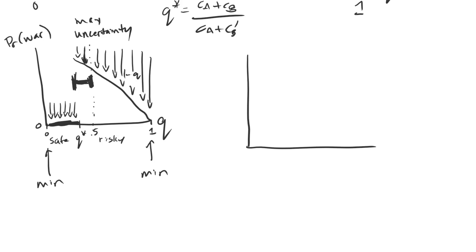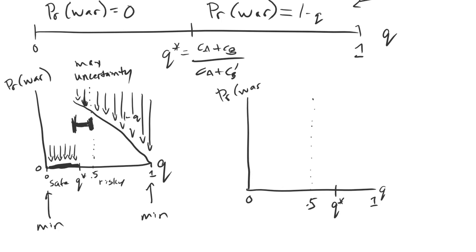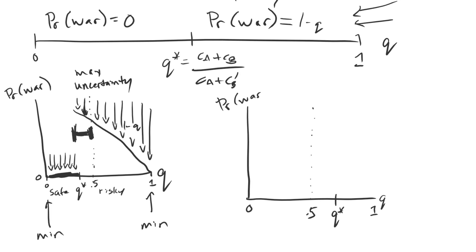There's a similar story if Q* is greater than one-half. Let's draw the same setup again, but now with Q* to the right of one-half. Q is on the x-axis, the probability of war on the y-axis; 0.5 maximizes uncertainty, while 0 and 1 minimize it. From zero to Q*, the probability of war is zero — we fill that in. Once we cross Q*, the probability of war becomes 1 minus Q, a downward-sloping line from that point.